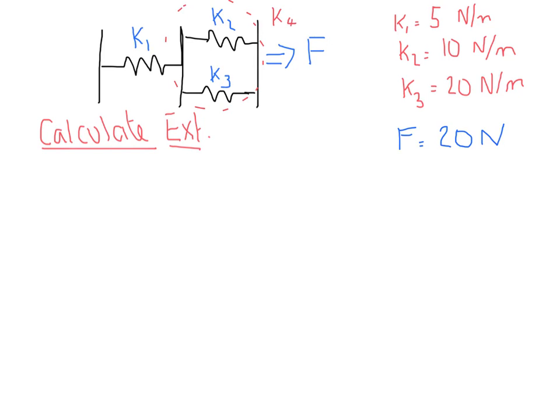So k2 and k3 are in parallel. So k4, nice and simple, is just going to be k2 plus k3, 10 plus 20 is equal to 30 newtons per meter.